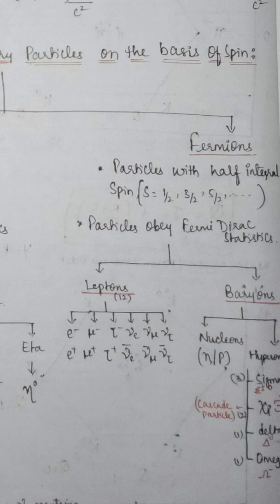Fermions have half-integral spin — multiples of one-half: 1/2, 3/2, 5/2, 7/2, and so on. Fermions follow Fermi-Dirac statistics.